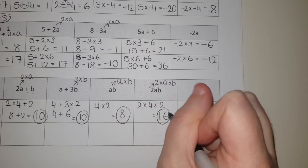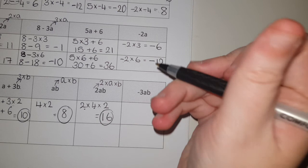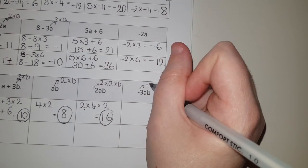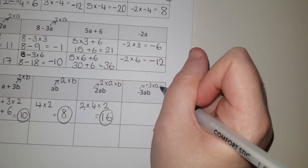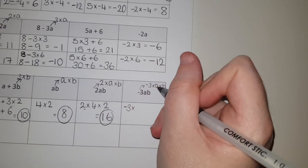And then our last one. Again, I've put a negative one in as a bit of a challenge at the end. So you're doing minus three multiplied by A multiplied by B. So I do minus three multiplied by - A is four - and B is two.